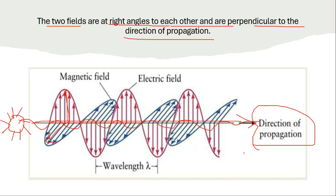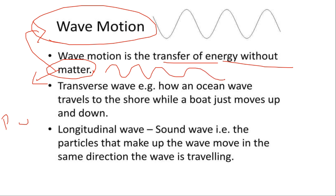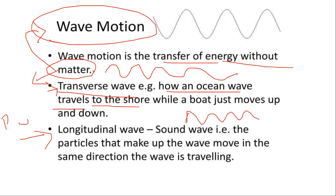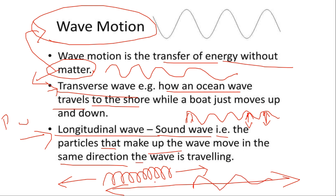Wave motion is the transfer of energy without matter. These motions fall under two types: transverse waves and longitudinal waves. Transverse waves move up and down — like how ocean waves travel to shore while a boat moves up and down. Longitudinal waves move in the same direction as the wave travels — like a compressed spring or a sound wave, where particles move horizontally in the same direction as the wave.